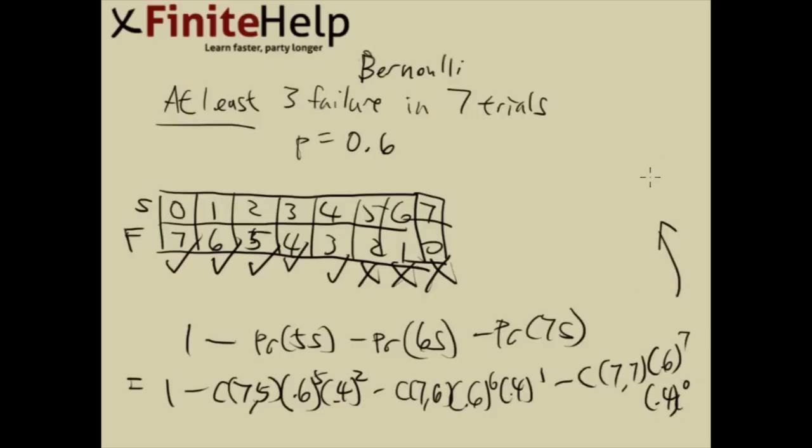We have room there, so I'll go up here. So that's going to be 1 minus 7 choose 5, that's 7 times 6, that's 21. So here we have 21 times 0.6 to the fifth, times 0.4 to the second, that's going to be 0.261.